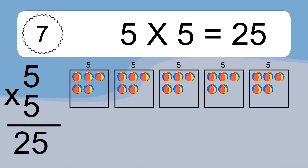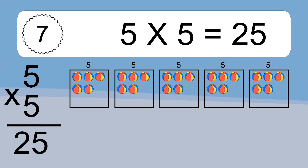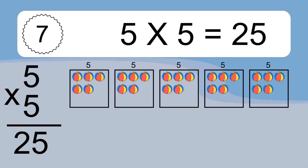We have 5 boxes and each box has 5 colorful balls inside. If you count all the balls in all the boxes together, you will have 5 times 5 balls. This equals 25 balls.